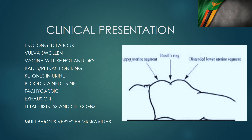How does obstructed labour present? Normally it presents with a woman who has been labouring for a while, definitely above 18 hours. The normal duration of labour is somewhere between 12 and 18 hours, so this woman has been labouring for more than 18 hours — in our setup, many of them above 24 hours. They've been on a boat, trying to go through the mountains, trying to cross rivers, trying to get to the nearest facility. The first cardinal thing about diagnosing obstructed labour is recognising the duration.